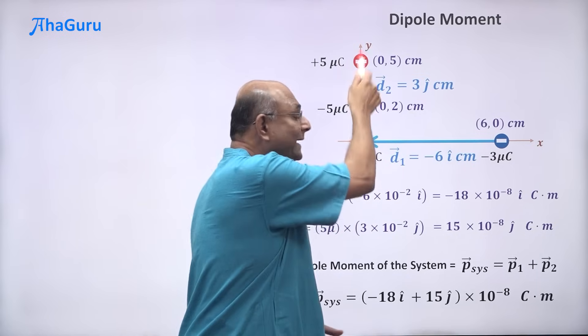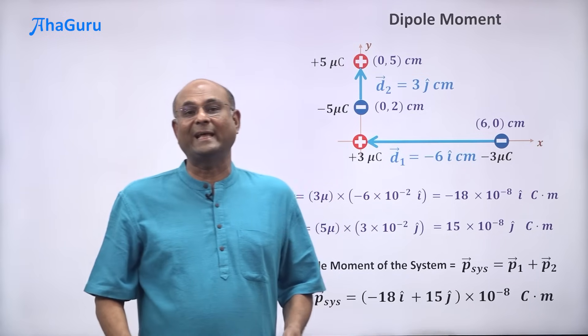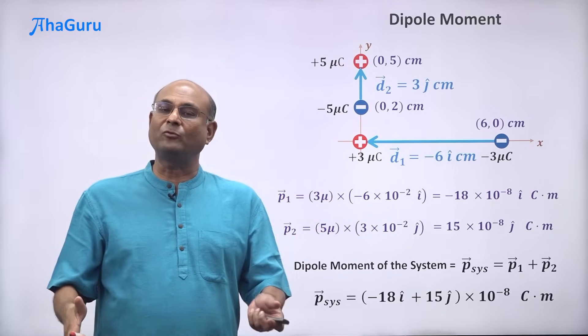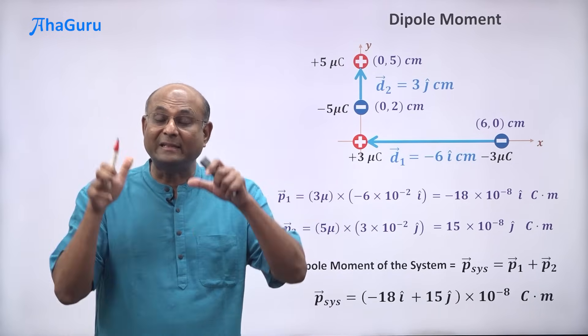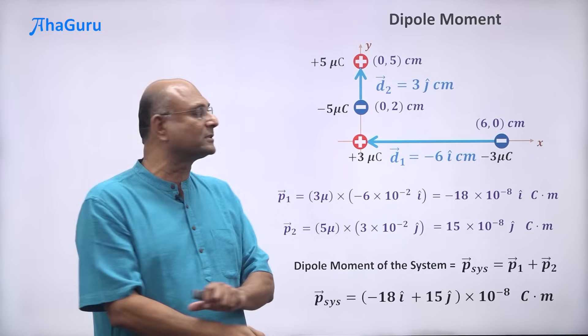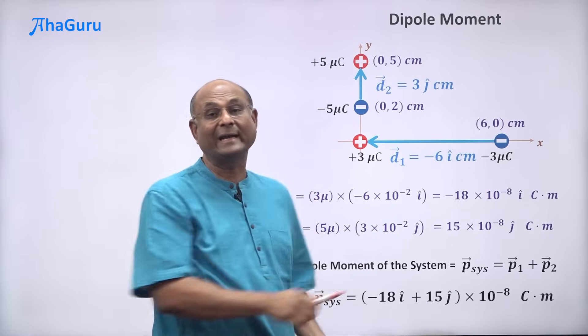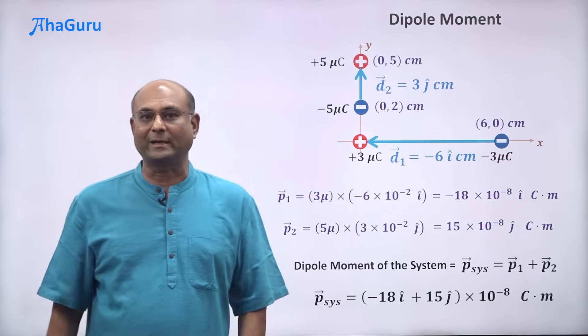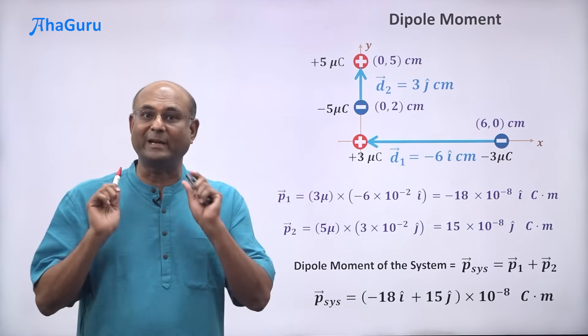Finding the dipole moment of a system is very simple: if you have many dipoles, find the dipole moment for each one and then add them all up vectorially.